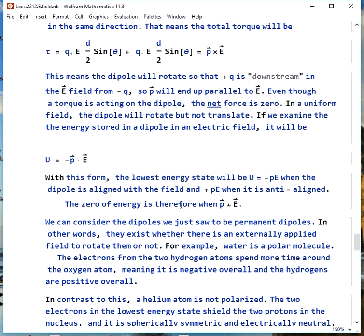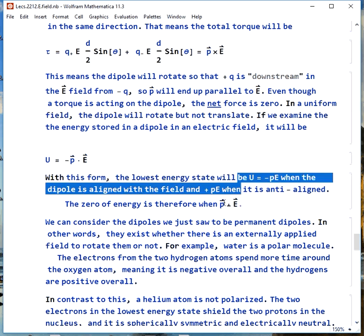Even though there's a torque acting on the dipole, the net force is zero. If we have a uniform field, the dipole will rotate, but it won't translate. It'll sit still in that spot. Its center of mass won't move. If we look at the energy stored in a dipole in an electric field, we can write that as the dot product of p and e, rather than the cross product. We get a negative sign here. The reason is the lowest energy state is when the dipole is aligned with the field. There we get u equals negative pe. If it's anti-aligned, that's the highest energy state, and our zero of energy would be if p was perpendicular to e.